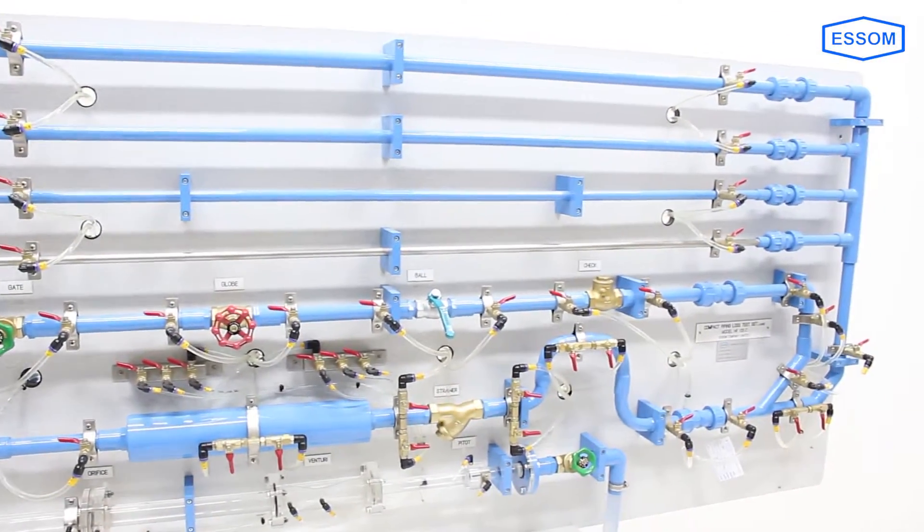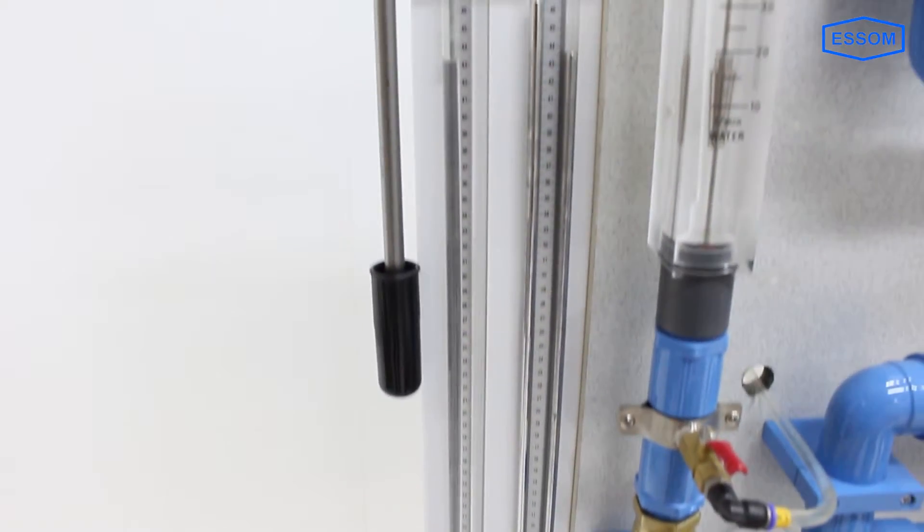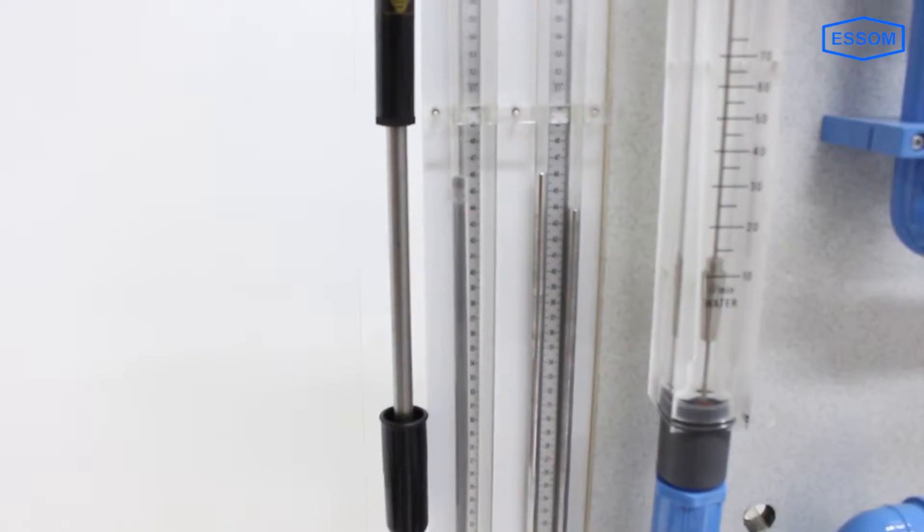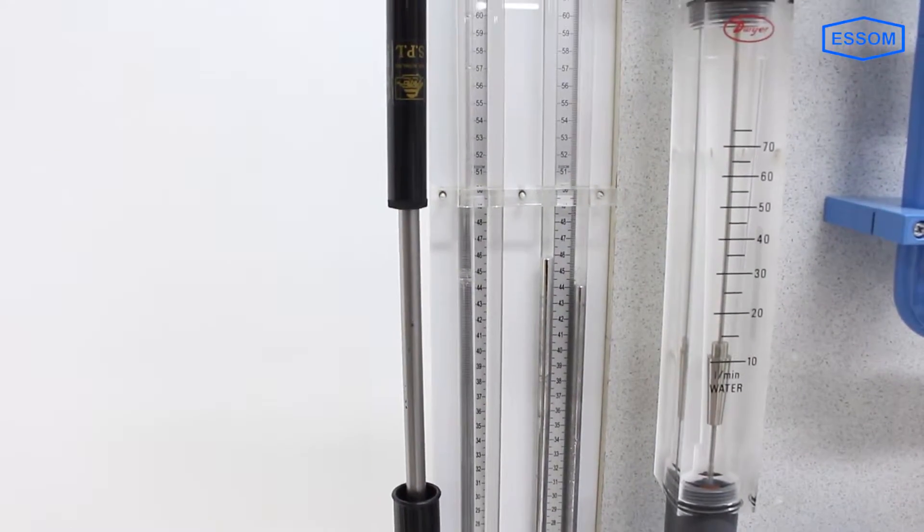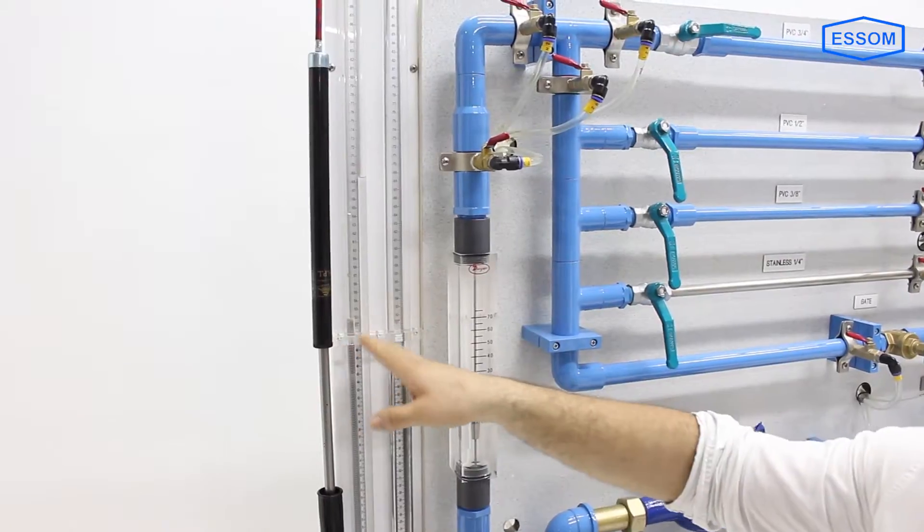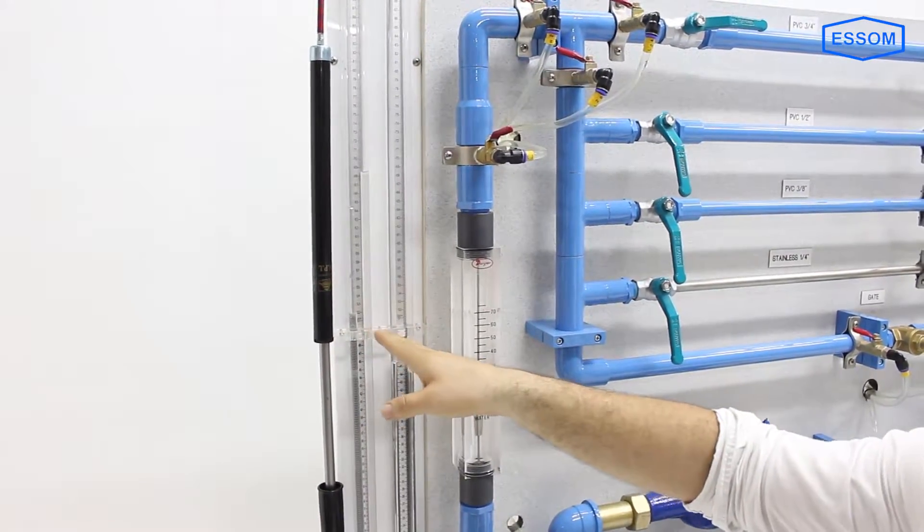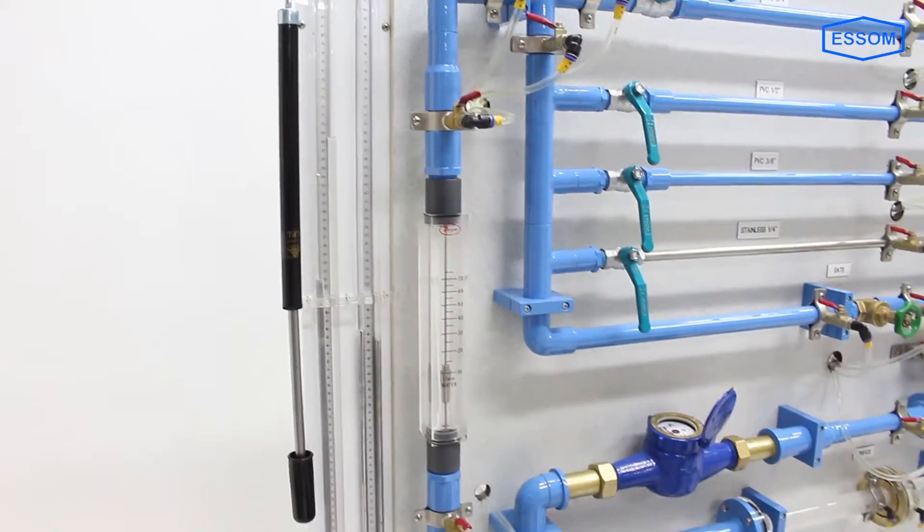The friction loss and coefficient of discharge are measured by differential pressure drop using manometers or a differential pressure gauge as optional.